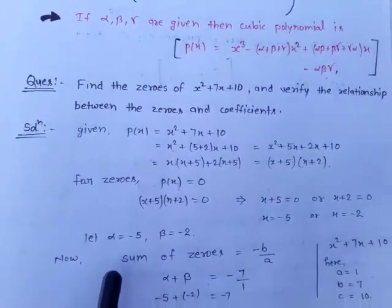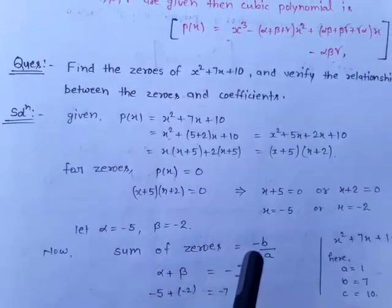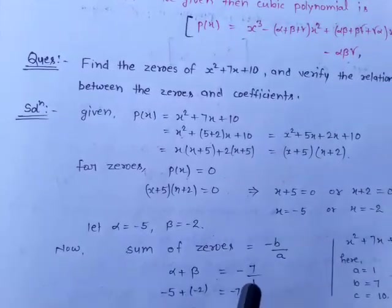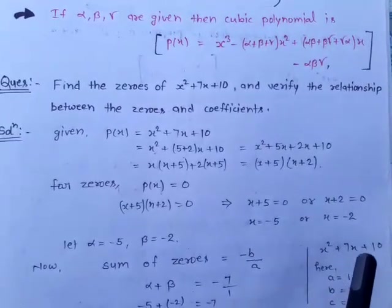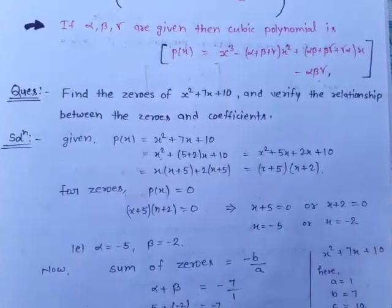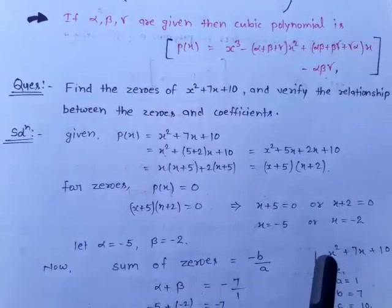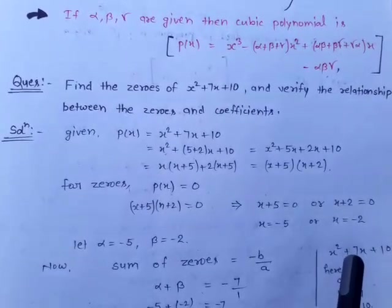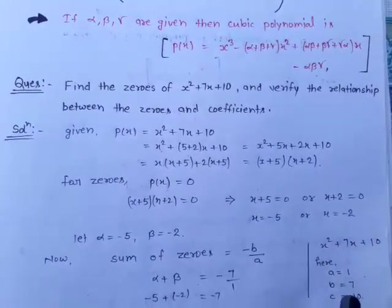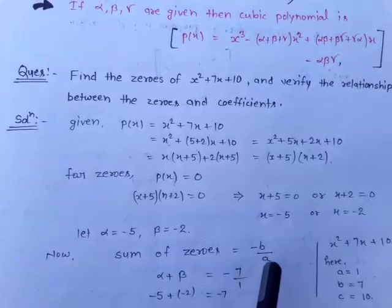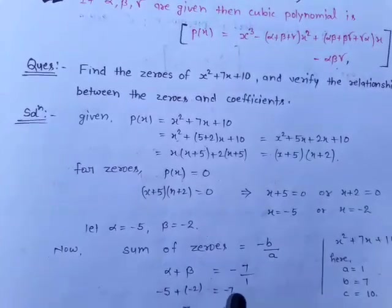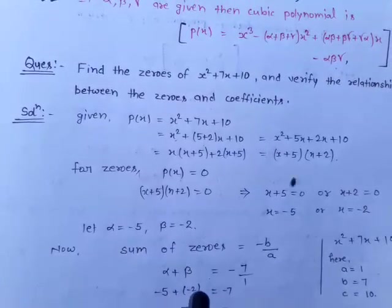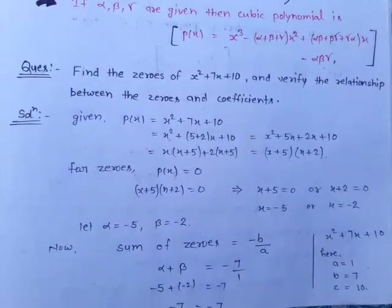Now we verify the relationship between zeros and coefficients. For sum of zeros, the pattern is –b/a. Comparing x² + 7x + 10 with ax² + bx + c, we get a = 1, b = 7, c = 10. So –b/a = –7/1 = –7. And alpha + beta = (–5) + (–2) = –7. Since –7 = –7, the sum of zeros is verified.